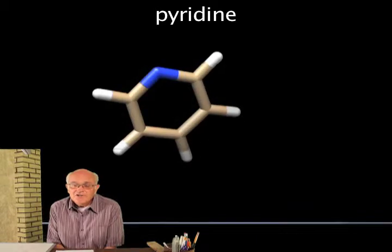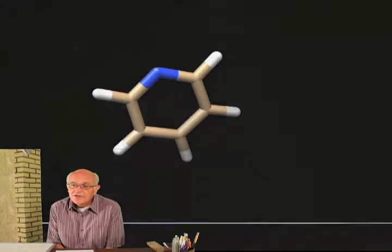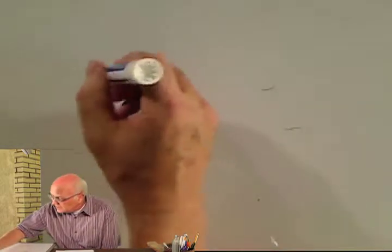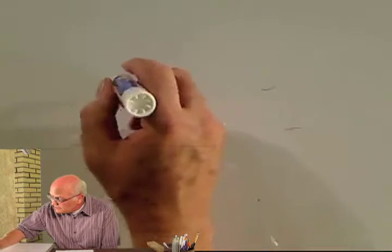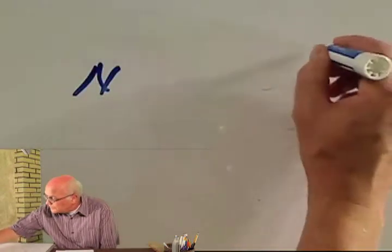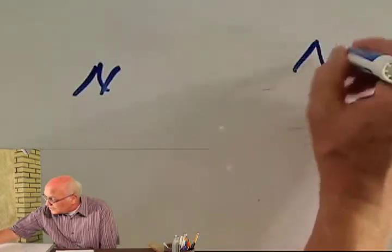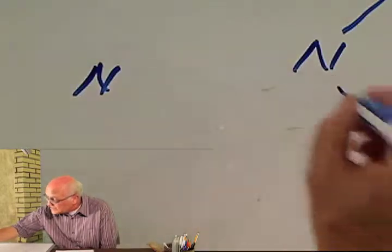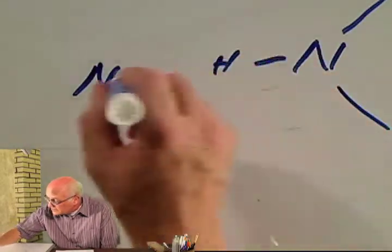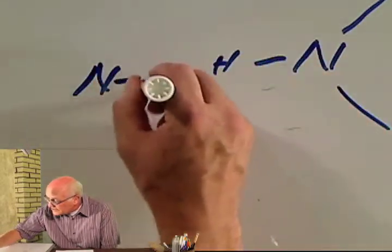To properly understand the structure of DNA, we need to take a look at hydrogen bonding. Hydrogen bonding occurs between, for example, two nitrogen compounds that are in an aromatic planar state, each of which has a hydrogen.